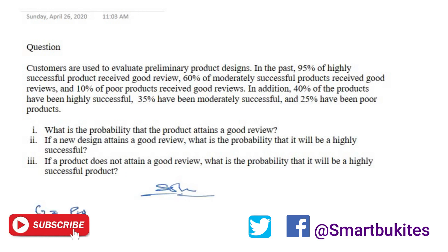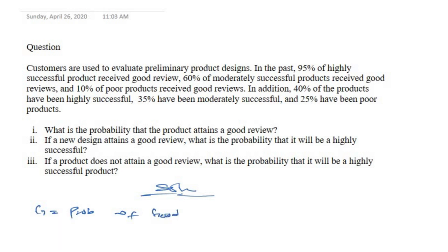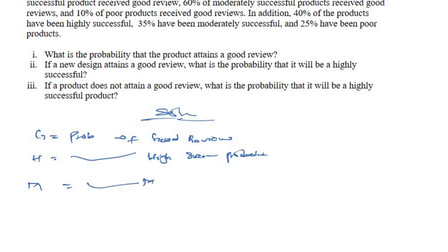For the solution, let G be the event of a good review, H be the event of a highly successful product, M be the event of a moderately successful product, and P be the event of a poor product.